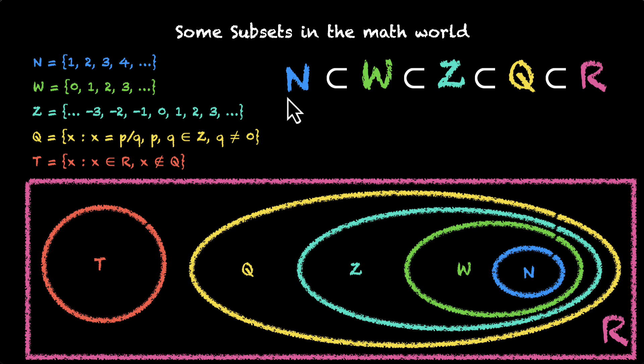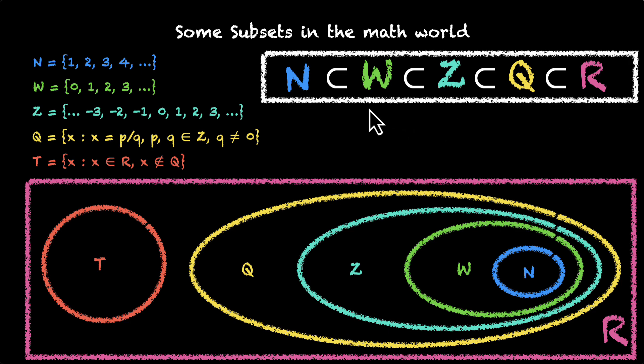...you can see that natural numbers are not only subset of whole numbers. They are also subset of integers, rational numbers, and real numbers. So this is the chain.